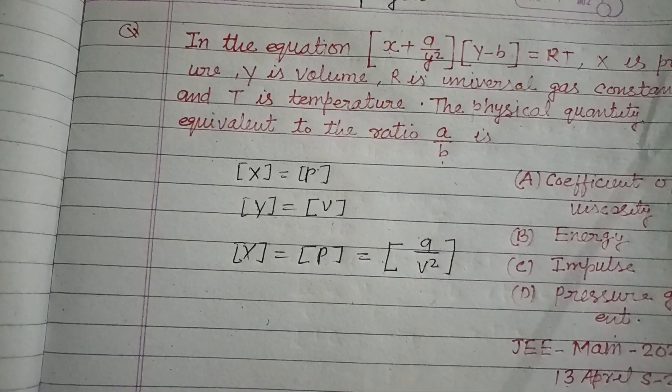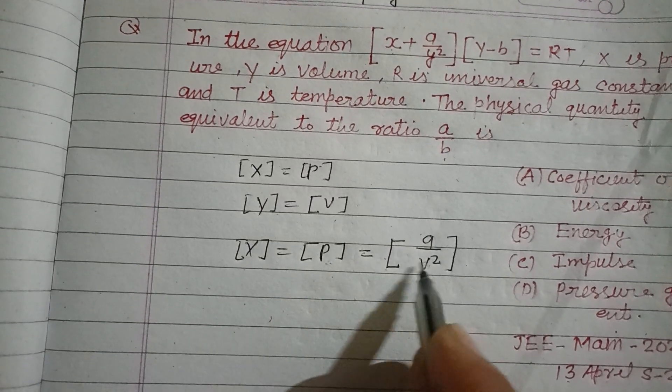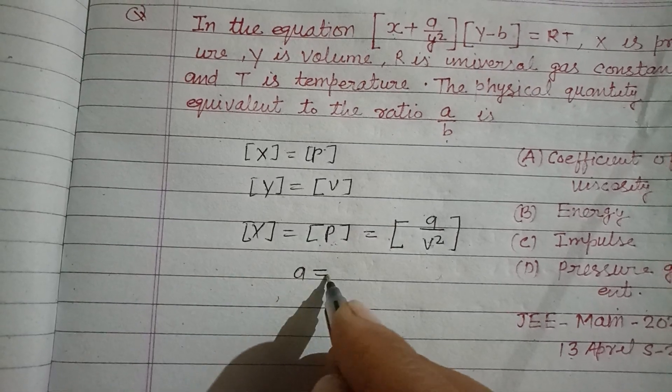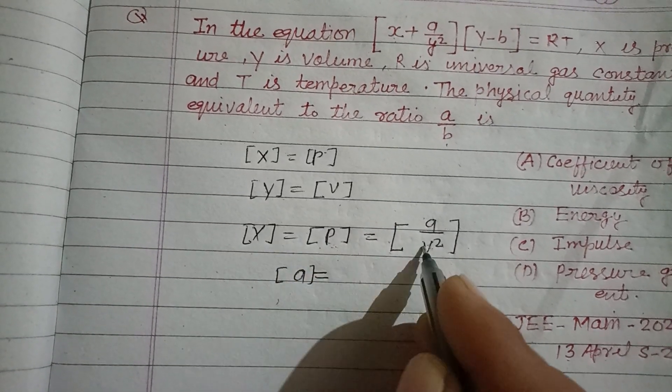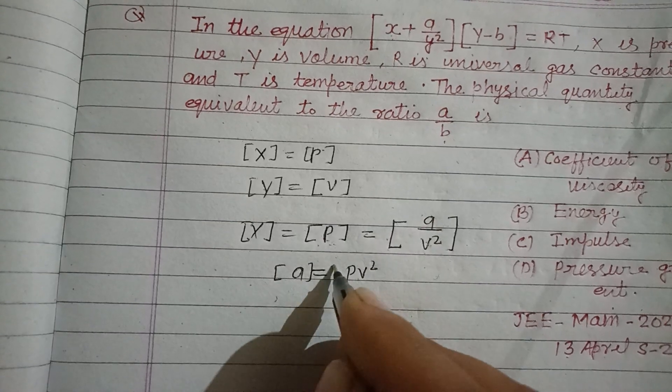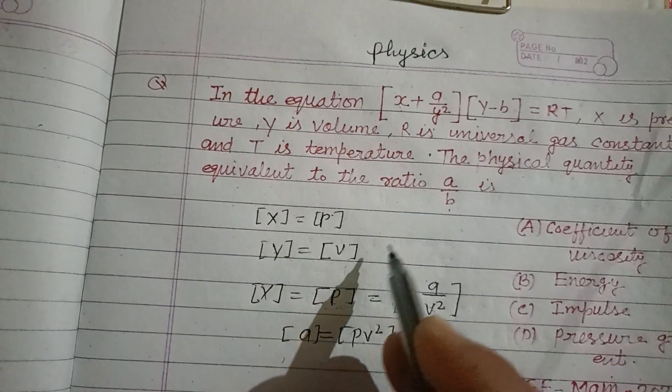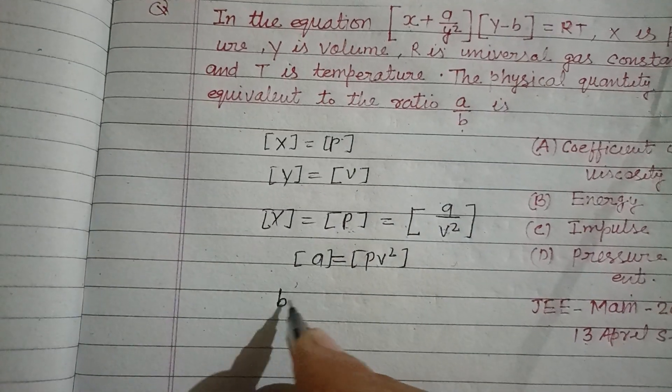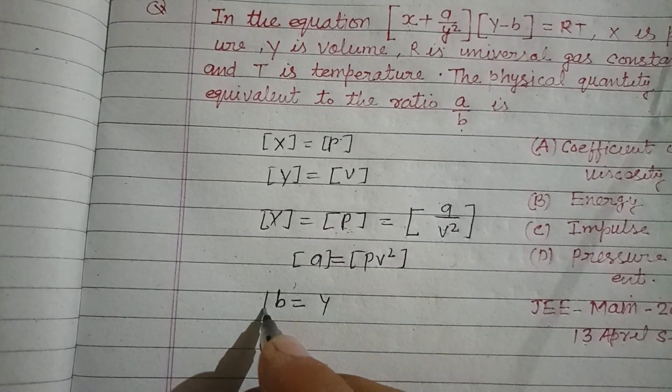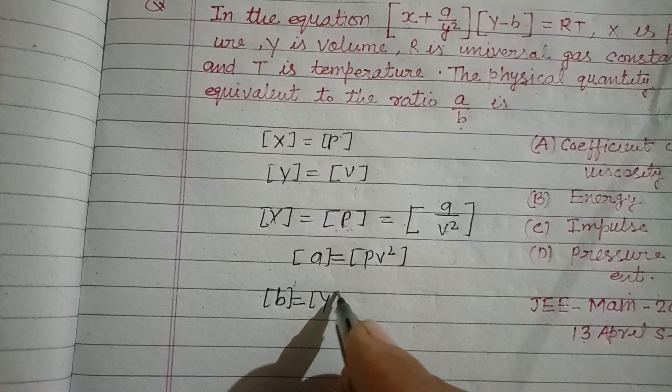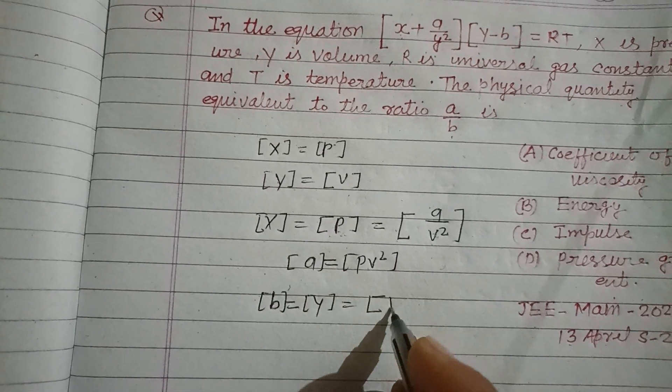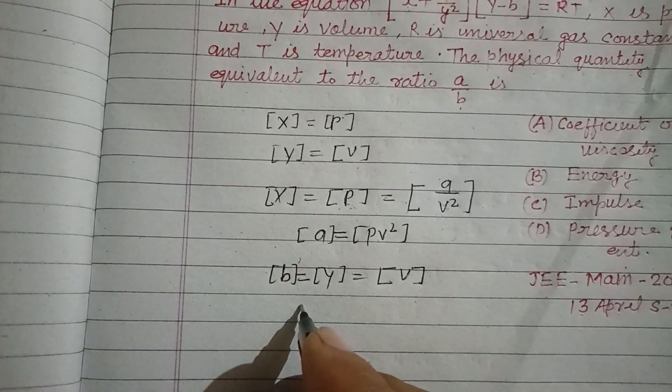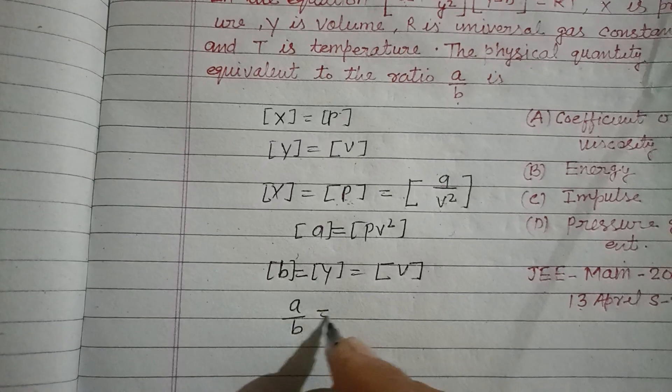From here we can get a = Pv². Since (v - b) is also volume, b has the dimension of volume. Now we want to find out the dimension of a/b.